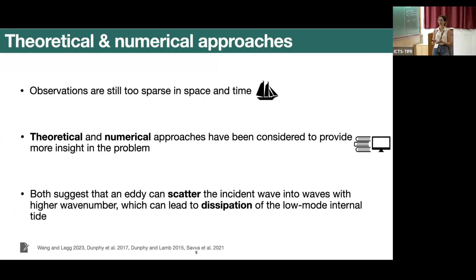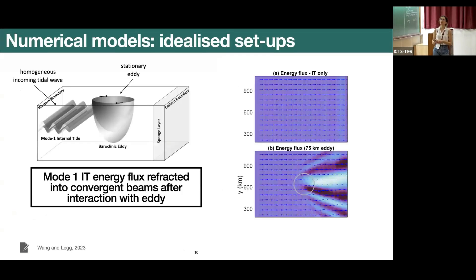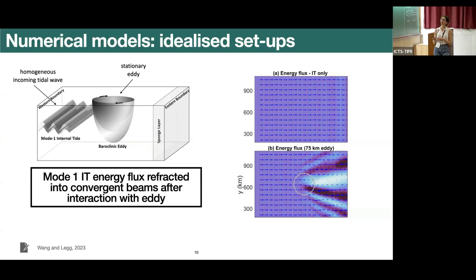Both theoretical and numerical approaches suggest that an eddy can scatter the incident wave into waves with higher wavenumber, which can then lead to dissipation. One recently published example is Wang and Legg — on the left their idealized setup has a homogeneous incoming tidal wave and a stationary baroclinic eddy. On the right you have the energy flux with internal tides only, and below, the case where an eddy is added. They find that mode one energy flux is refracted into convergent beams after interaction with the eddy.